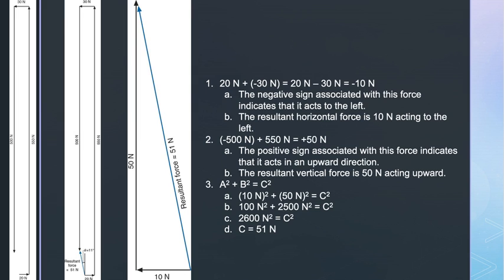With regards to the vertical forces: −500 Newtons + 550 Newtons = positive 50 Newtons. The positive sign indicates it acts upward. The resultant vertical force is 50 Newtons acting upward. In order to determine the resultant of the horizontal and vertical forces, we must use the Pythagorean theorem.